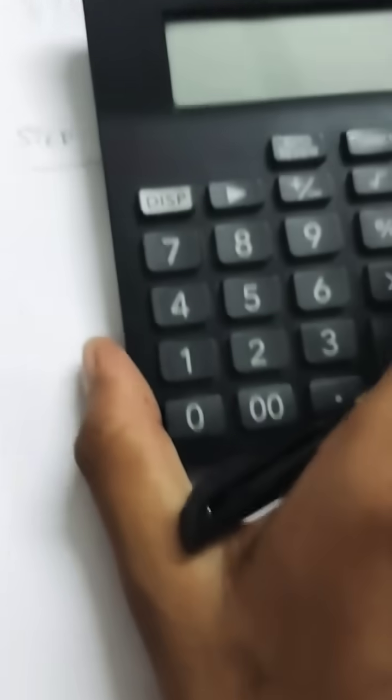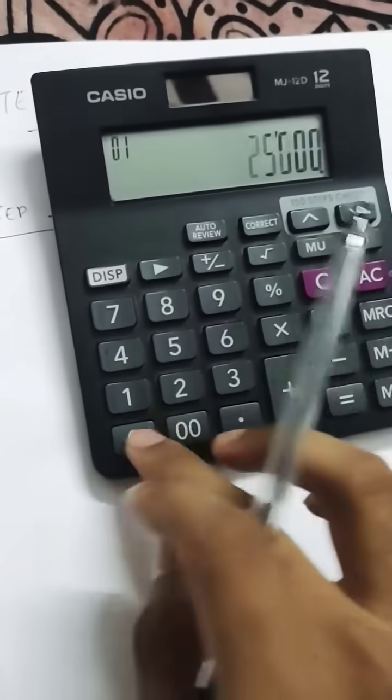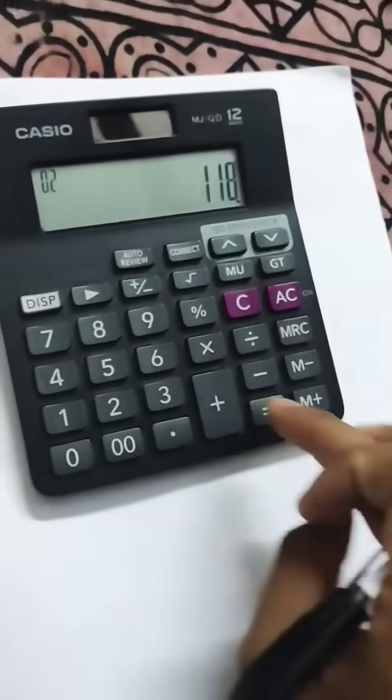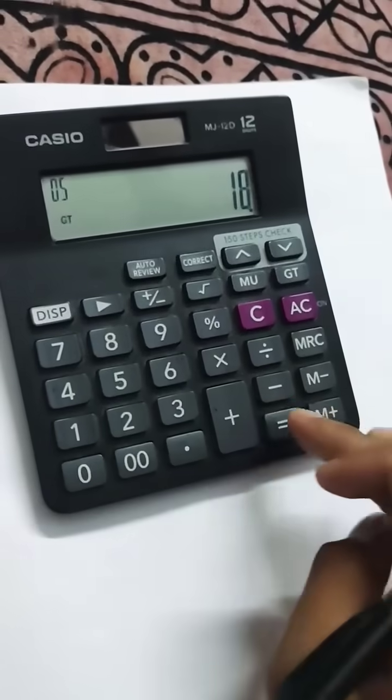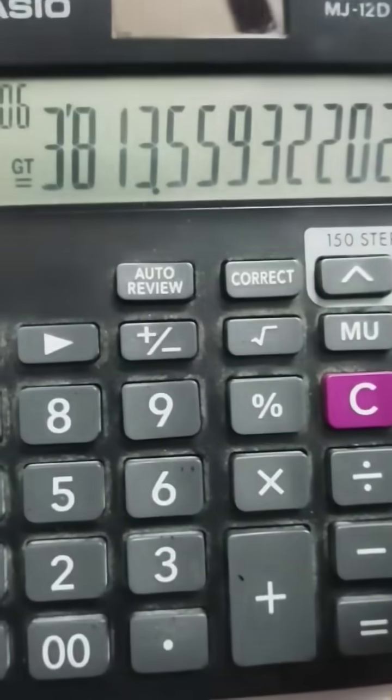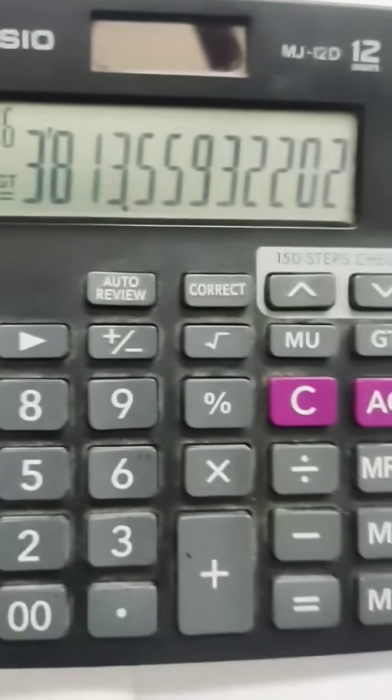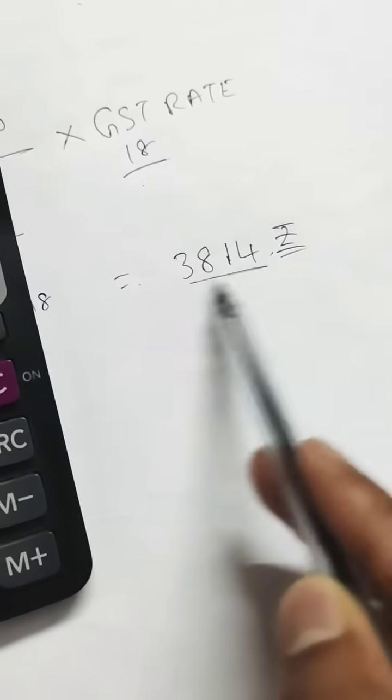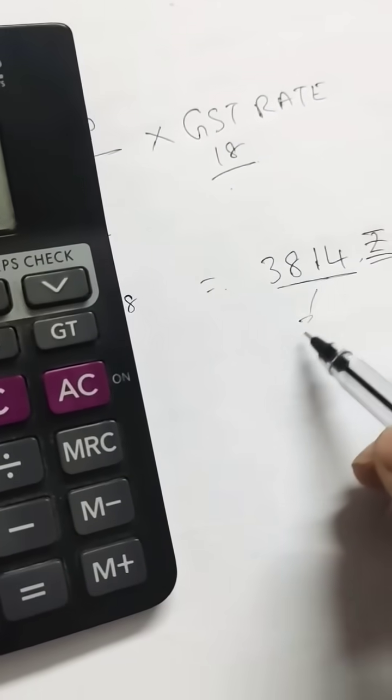Let us see what is the answer. ₹25,000 divided by 118, multiplied by 18. It is 3813. See that? 3814. Let us round it up to ₹3,814. This is the inclusive of GST.